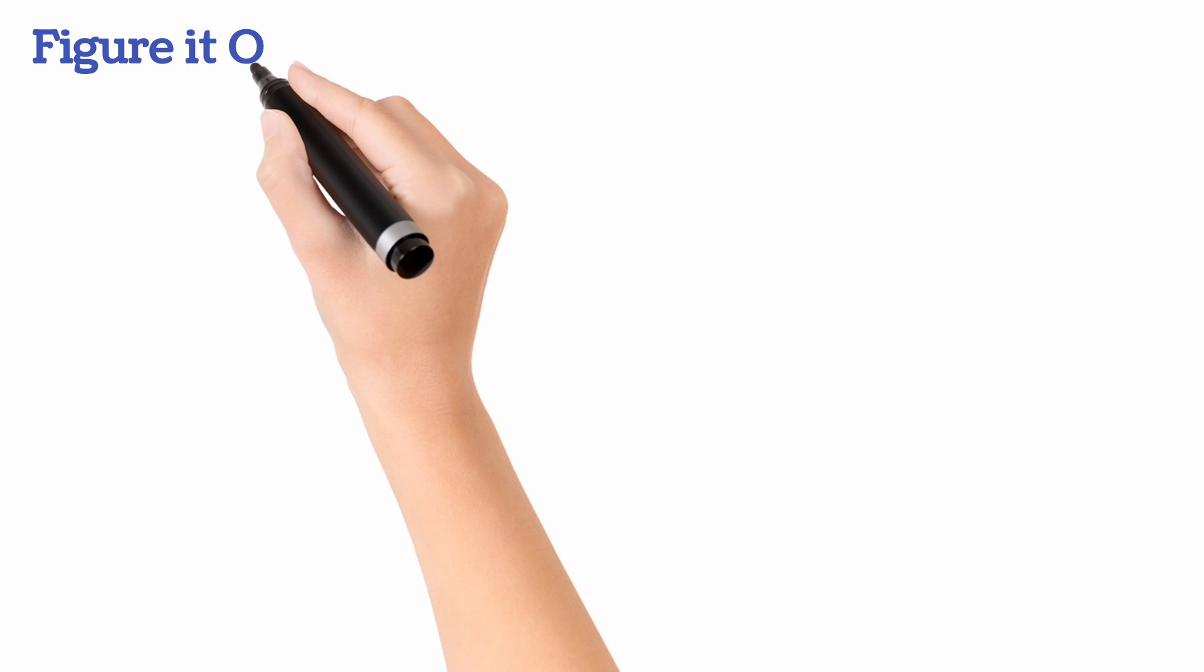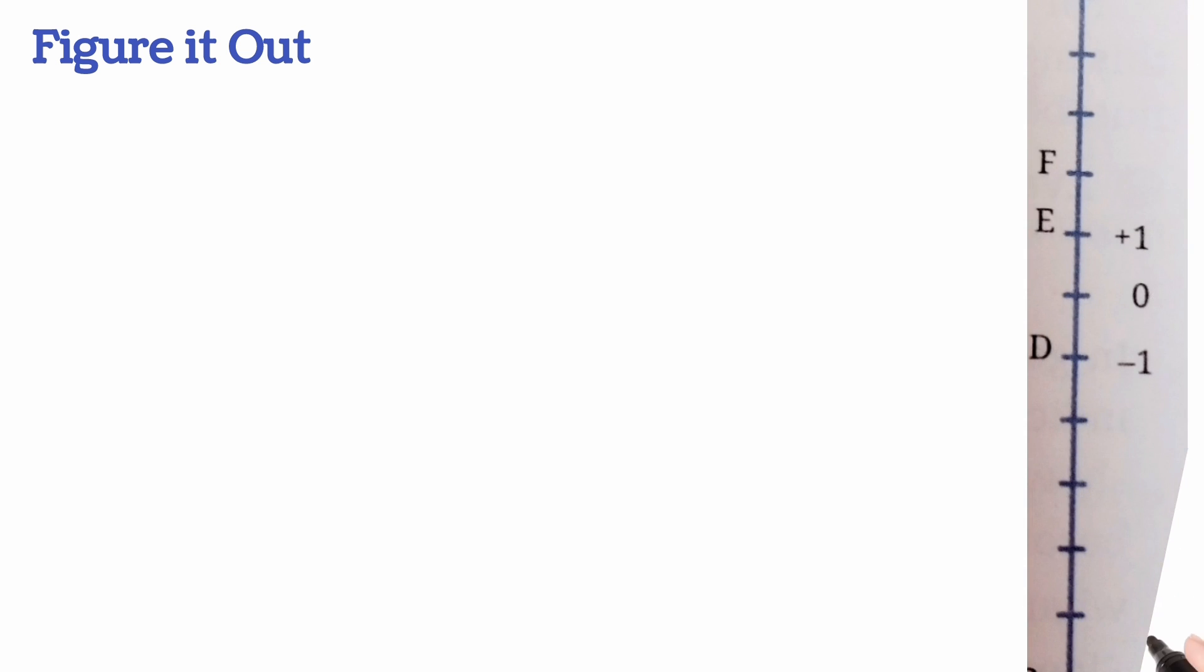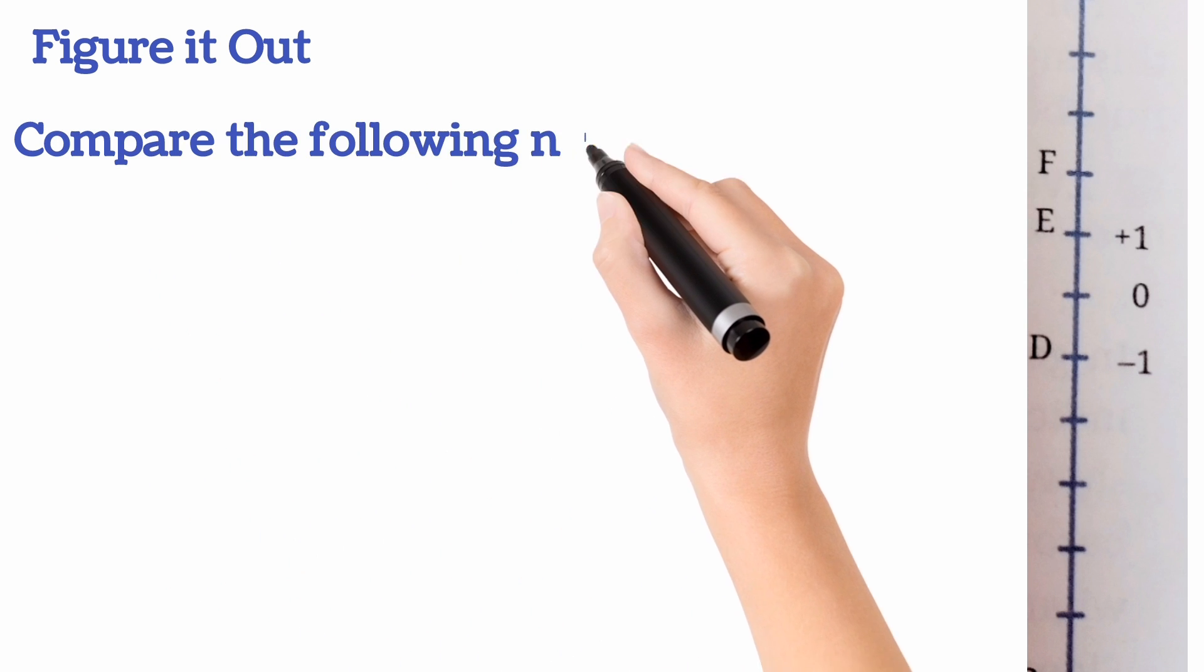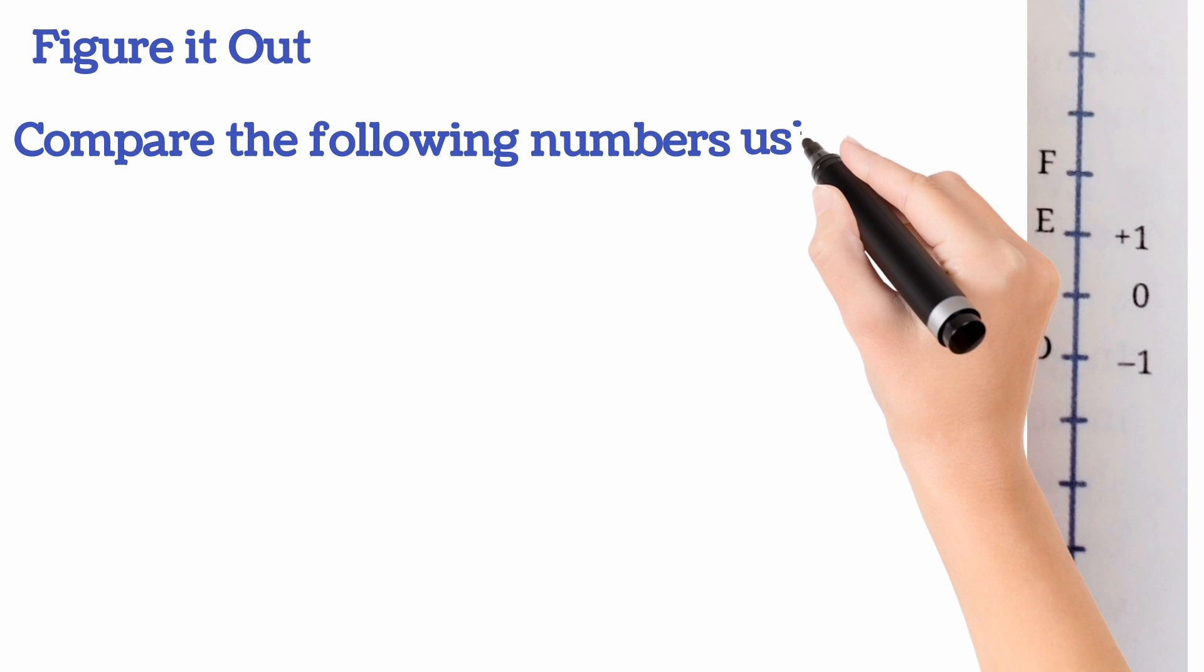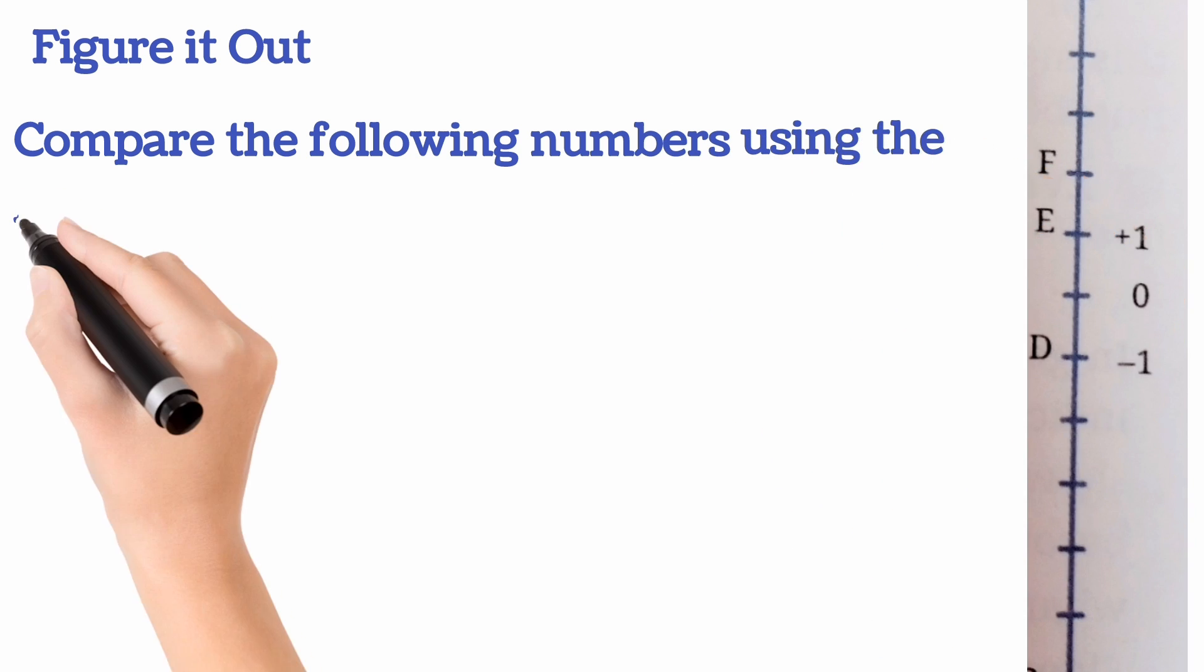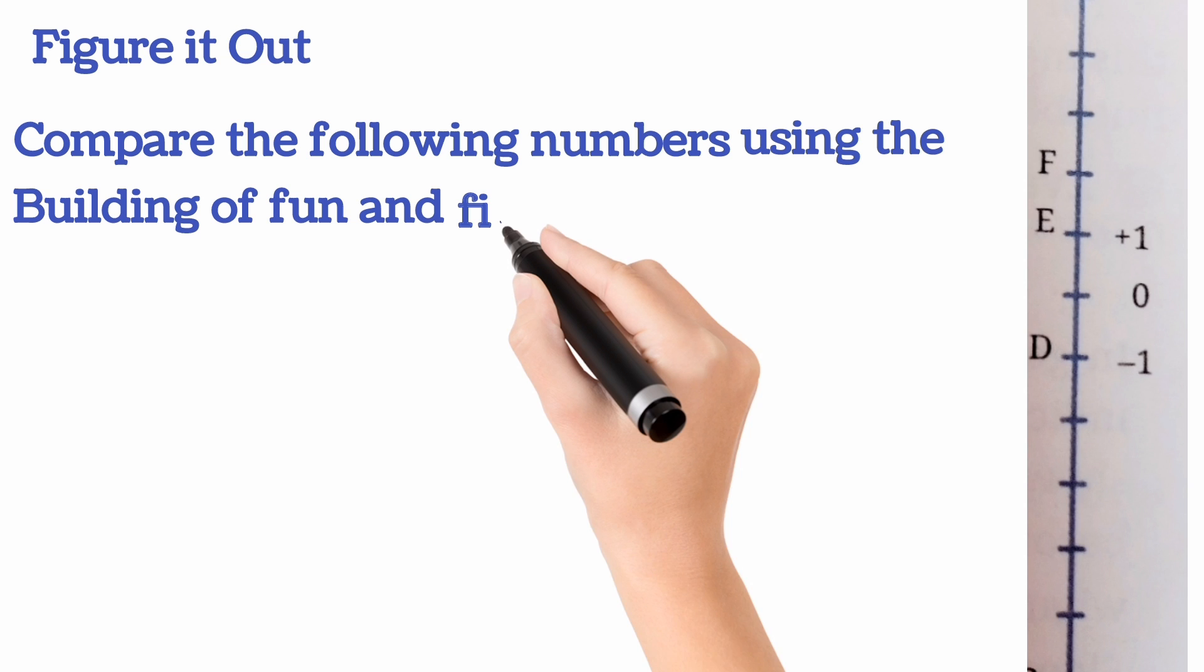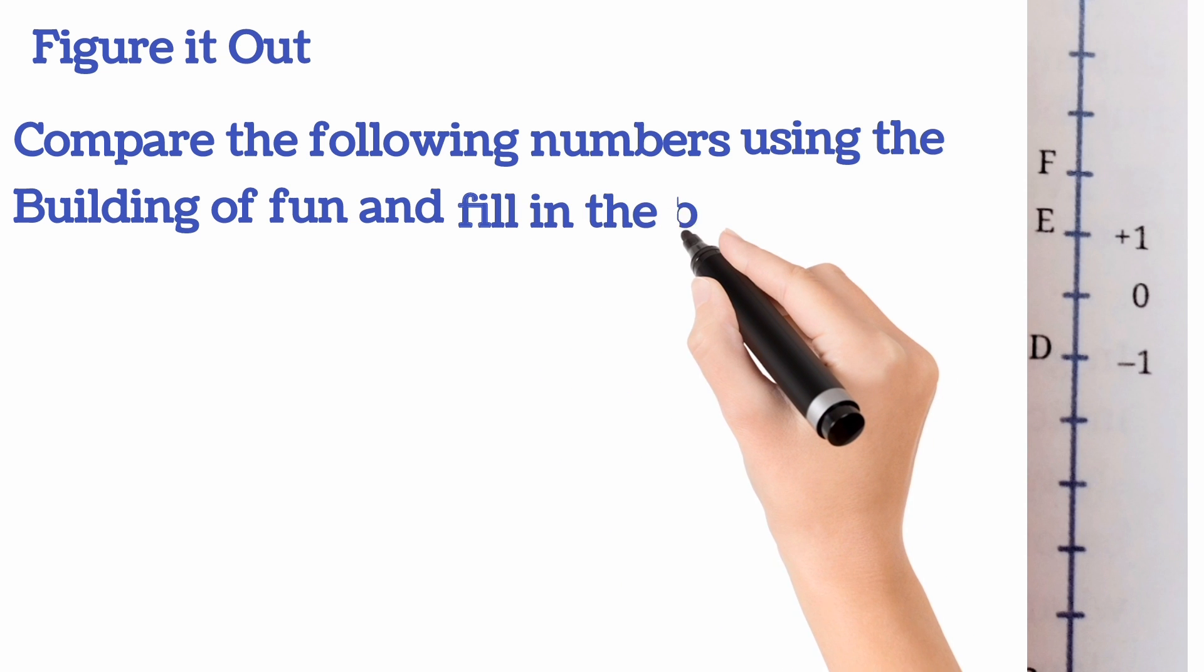Now next, page number 247. Figure it out. Here we will learn how to compare the integers. You see this figure? In middle, there is 0, above the 0, all positive integers. Like this, plus 1 you can see. Then next is plus 2, plus 3. All positive integers are above the 0 and negative integers are below the 0. Minus 1, minus 2, minus 3, all these. Means, positive integers are bigger than 0 and negative integers are less than 0. And minus 1 is the biggest negative integer.